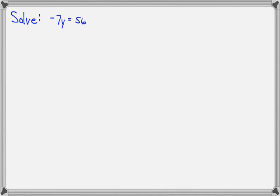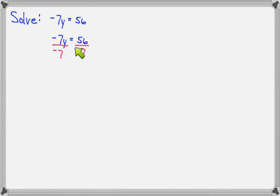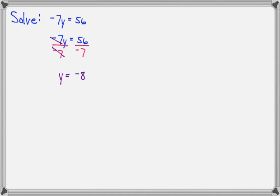Here's another one: negative 7y equals 56. What I want to cancel out is a negative 7. So we're going to divide the left side by negative 7, and the right side by negative 7. We've talked about this before — we won't leave the negative in the denominator, but it's okay to put it here while we're working things out. On the left side, the 7s cancel and the negatives cancel, leaving just y. On the right side, 56 divided by negative 7 is negative 8. Negative 7 times negative 8 would be positive 56, so negative 8 is correct.